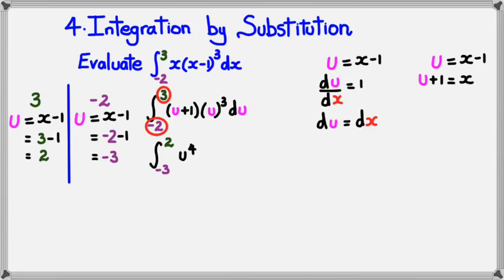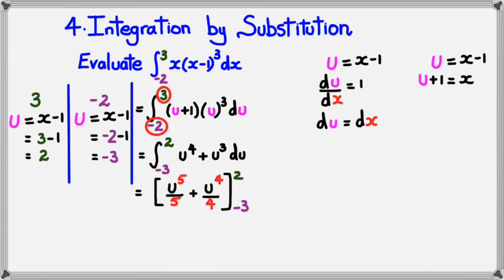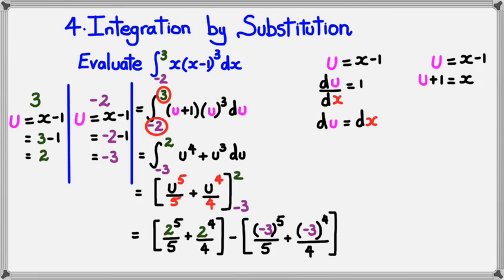So expanding this, I'm going to get u to the power of 4 plus u cubed du. And from this point onwards, it's straightforward. Integrating this, I get u to the power of 5 divided by 5 plus u to the power of 4 divided by 4, and that's between 2 and negative 3. Now, the reason I changed u is because now I don't actually need to substitute u as x minus 1 and do that whole thing again. Instead, I could straight away jump into this part right now and just say I can figure out what f of 2 is and f of negative 3 is, and it'll work out. So I've got 2 to the power of 5 divided by 5 plus 2 to the power of 4 divided by 4 minus negative 3 to the power of 5 divided by 5 plus negative 3 to the power of 4 divided by 4. And simplifying this, I should get 37.5.